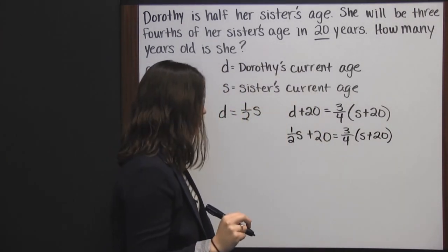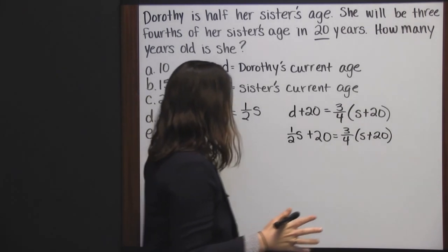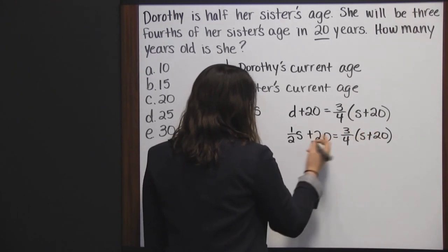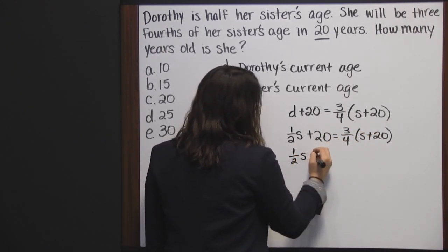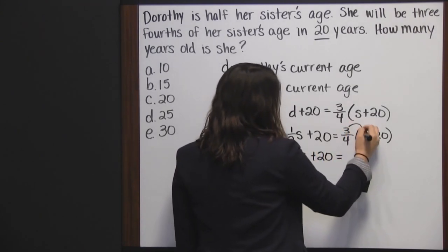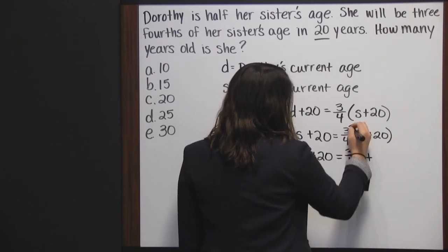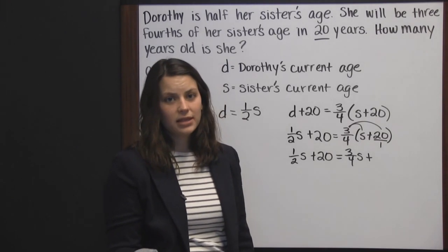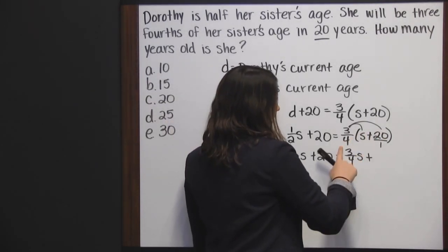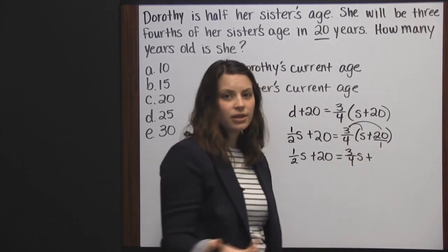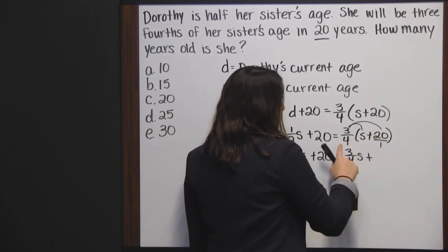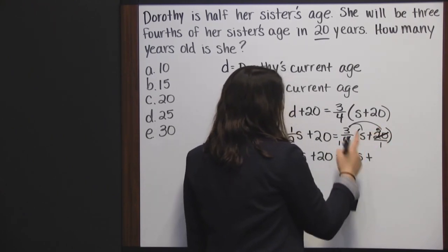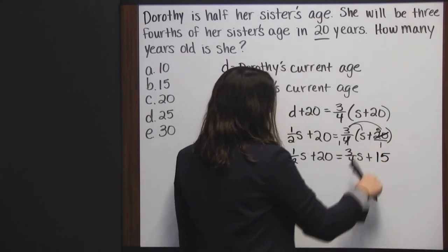From here we have lots of options for solving. The first thing I think about is getting rid of this fraction, this three-fourths. I'll start by distributing the three-fourths to what's inside the parenthesis. So I have one-half S plus 20 is equal to three-fourths S plus — and with three-fourths and 20, I can put 20 over 1 and cross-cancel 4 and 20. I divide both 4 and 20 by 4: 4 divided by 4 is 1, 20 divided by 4 is 5. So 3 times 5 is 15. Three-fourths of 20 is 15.